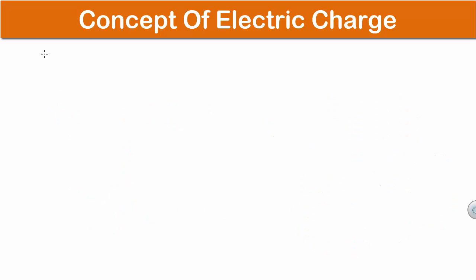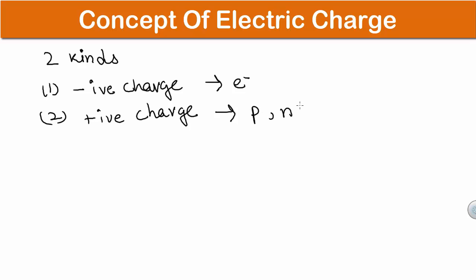Now electric charges are of two kinds. First one is negative charge and second one is positive charge. In an atom's electrons are the particles having negative charge and the nucleus which consists of protons and neutrons has positive charge. Now out of these two particles that are present in nucleus, only protons are positively charged and neutrons are neutral.